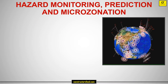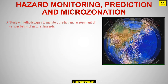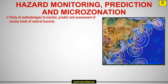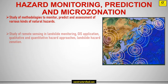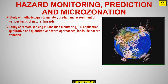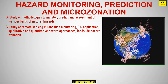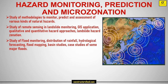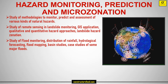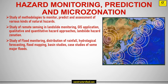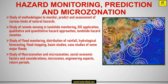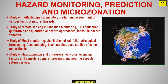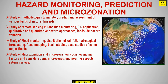Hazard Monitoring, Prediction and Microzonation: study of methodologies to monitor, predict and assess various kinds of natural hazards. Study of remote sensing in landslide monitoring and GIS applications, qualitative and quantitative hazard approaches, landslide hazard zonation. Study of flood monitoring, distribution of rainfall, hydrological forecasting, flood mapping, basin studies and case studies of major floods. Study of macrozonation, socioeconomic factors, microzones, engineering aspects and return periods.